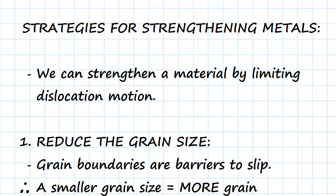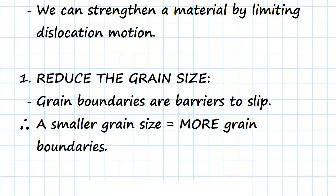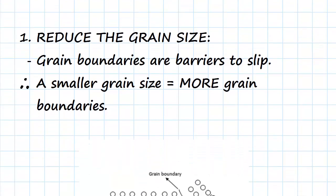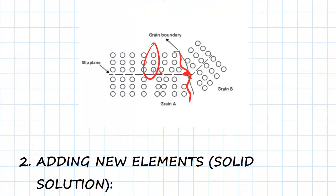The first strategy we're going to look at is reducing the grain size. If you think about it, a grain boundary is a barrier to slip. Therefore, if we reduce the grain size, we're going to be creating more grain boundaries, and therefore we're going to limit the amount of dislocation motion that can occur. If you look at this schematic here, we can see when we have one grain and then a grain boundary — if this plane is moving through the crystal, once it reaches this spot here, it's going to stop and the dislocation motion is going to be impeded, therefore halting deformation.